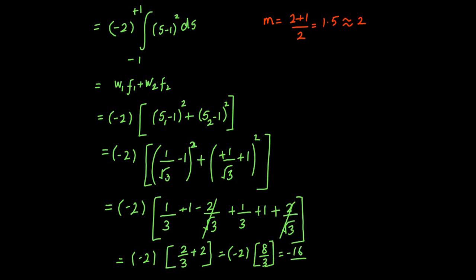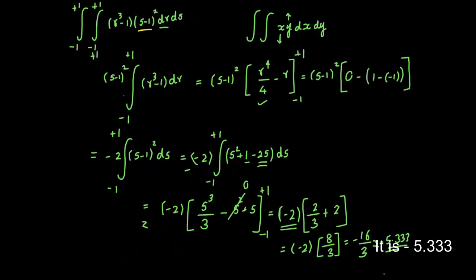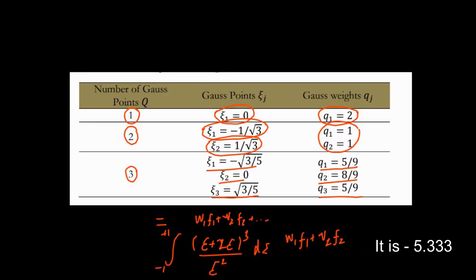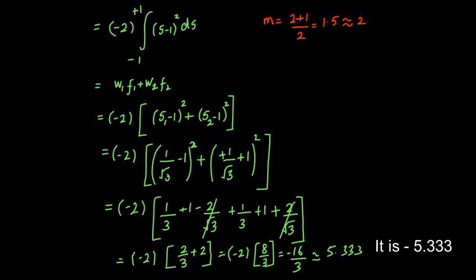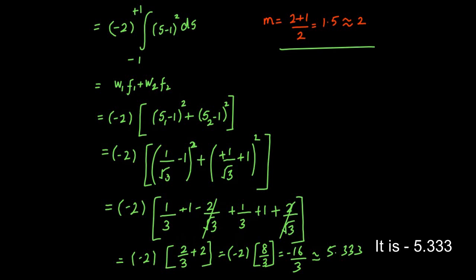So I get -16/3, which is approximately -5.333. You can compare the results and see that the two results actually go hand in hand — we get the same answer. You have to keep in mind the Gauss points table, and you can see that any complicated function can be easily integrated if you know the number of Gauss points and the weights. We will do one more problem, maybe a triple integral, so you will definitely appreciate the numerical integration. Thank you all for your patience.